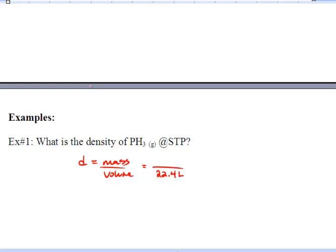Now to find this mass, we need to use the molar mass. We look on our periodic table and find that phosphorus has a molar mass of 31 grams per mole, and hydrogen has one. So the total mass of this is 34 grams per mole. We put this in and we find the density is 1.517 grams per liter. So that's our first example.